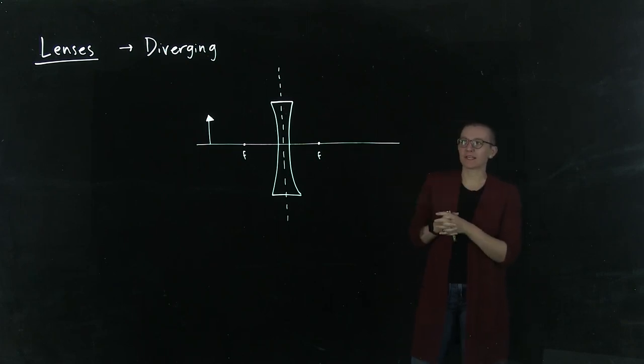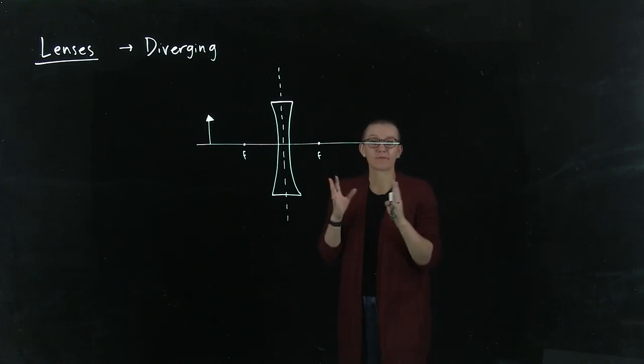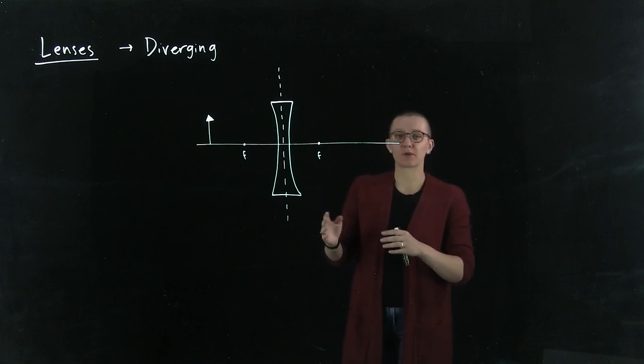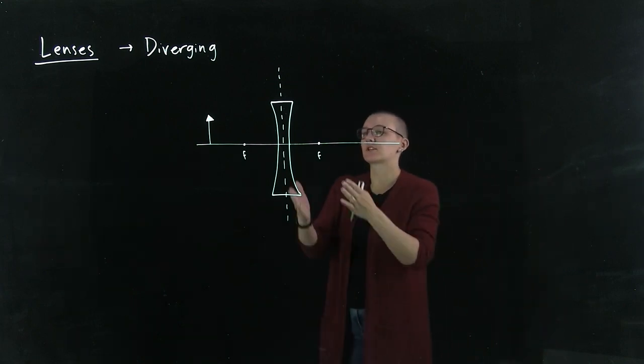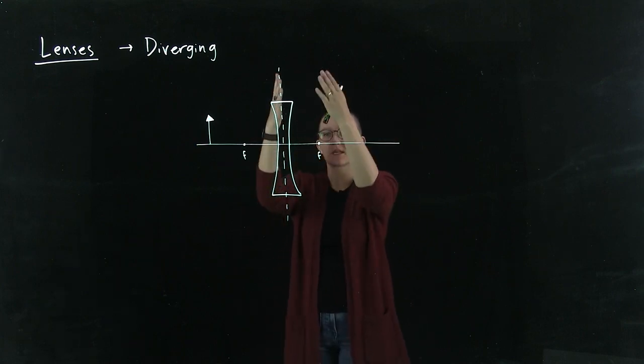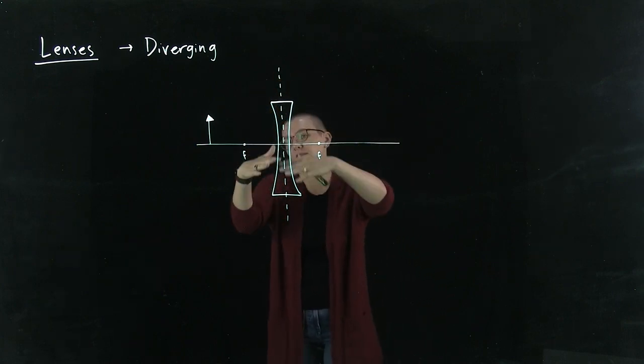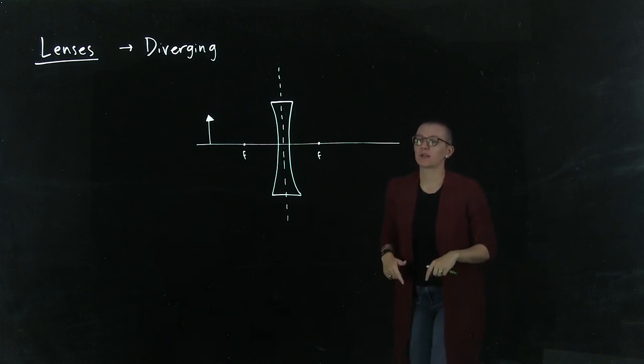Alright, talking about diverging lenses now. A diverging lens is the opposite shape of a converging lens. In this diverging lens, we have two curved surfaces that are curved towards each other, giving this sort of hourglass figure.